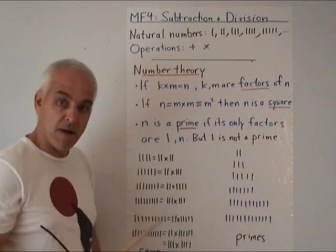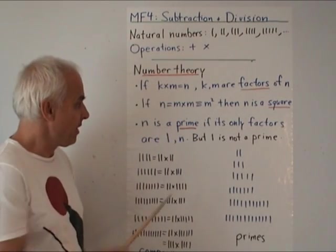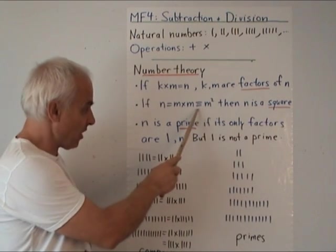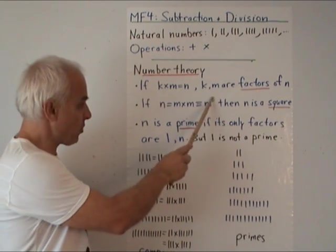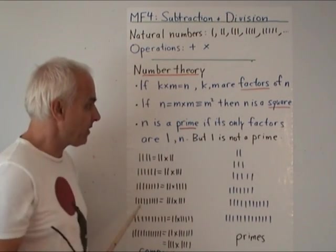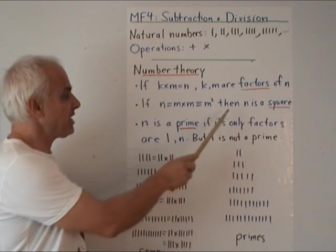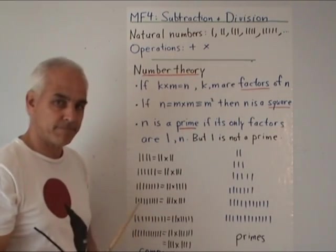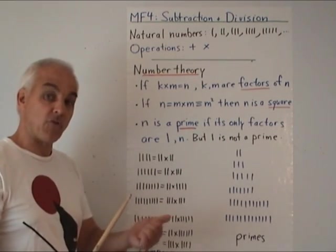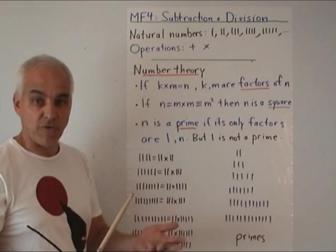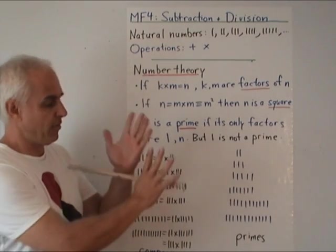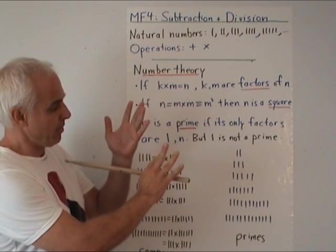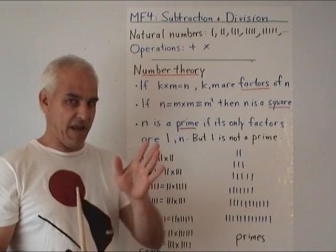Another definition: if N equals M times M, we introduce the notation M² for that — M squared just means M times M. Then we say that the number N is a square. So one is a square, four is a square, and the next square is nine (written as a string of nine ones), since we don't have a name for nine yet.